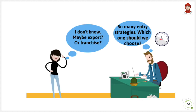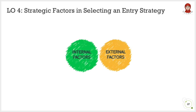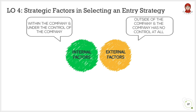We have discussed so many types of entry strategy, so which one should a company choose? The answer is not just any we like. The selection of an entry strategy is very important to ensure the successfulness of the company in the foreign country. In this last learning objective, we will examine the strategic factors in selecting an entry strategy. There are two groups of factors: internal and external. Internal factors refer to factors within the company and under its control, whereas external factors are outside of the company and the company has no control at all.